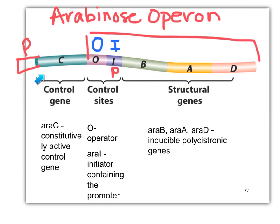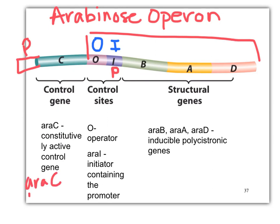The control gene, or the regulatory gene, has its own promoter and is constitutively active, which means we always get transcription. What do we get transcription of? The ARAC protein. So we always, always, always have that.